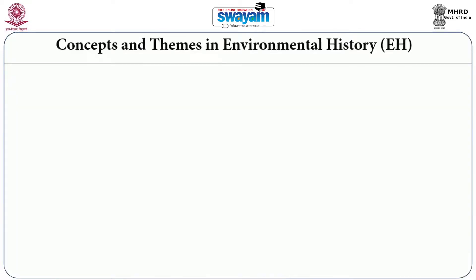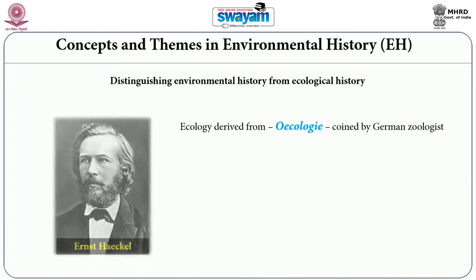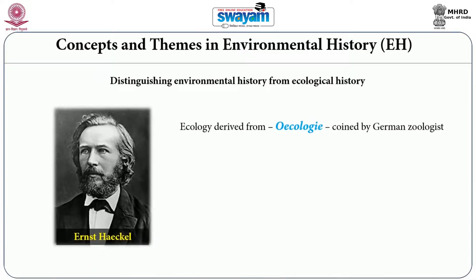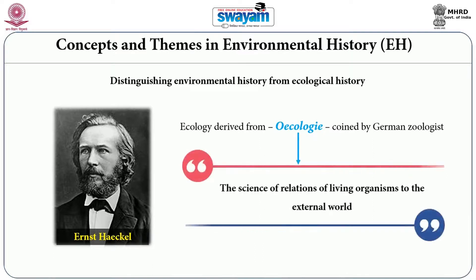Often we come across that environmental history and ecological history are simultaneously or interchangeably used. However, Ramachandra Guha and David Arnold in their book Nature, Culture and Imperialism make a conceptual difference between environmental history and ecological history. As we know, the science of ecology is derived from the word coined by German geologist Ernest Haeckel.